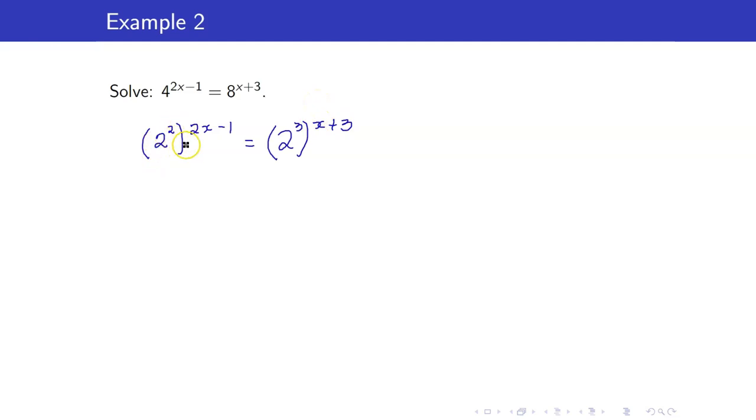Let us recall the laws of exponents. If you have a base, you raise it to an exponent, and you raise the whole thing to an exponent, you simply multiply the exponents. So you have 2 raised to 4x minus 2. This is 2 raised to 3 times quantity x plus 3, which is 3x plus 9. I now have the same base, so therefore, I can equate my exponents.